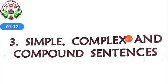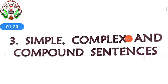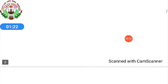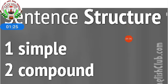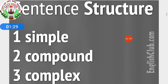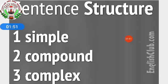We will learn about Simple, Complex and Compound Sentences. What are these? They are the structure of the sentence. So the sentence structure is Simple, Compound, Complex. If you remember, earlier I told you about sentences. What are sentences? A group of words which make meaningful and complete sense is known as a sentence.